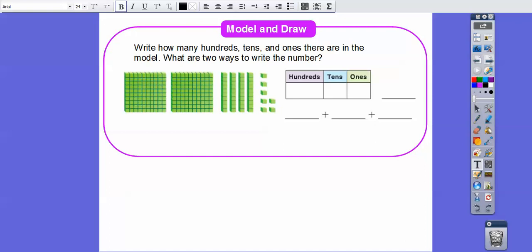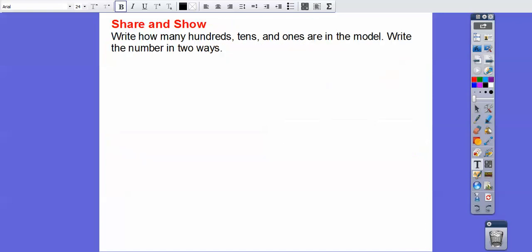So write how many hundreds, tens, and ones digits there are in the model. So what are 2 ways to write this model? So it looks like we have 2 hundreds right there. Let's go ahead and put that in. There's 2 hundreds. 200 represents 2 hundreds. There's 1, 2, 3, 4, 4 tens. So 4 tens is the same as 40. And then here's 5 right there. And then here's 5 right here, 6, 7. So there's 7 ones right there. So we get 247.